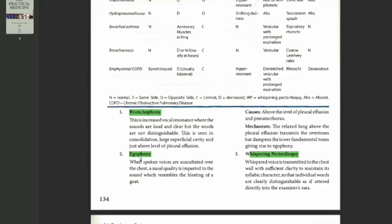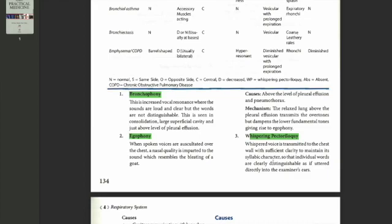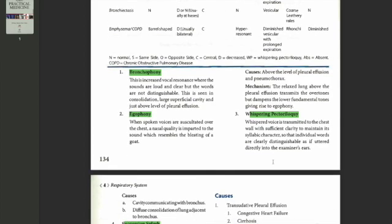A bronchophony. In egophony, you hear a nasal quality, so instead of 'ek do teen,' a nasal quality. In whispering pectoriloquy, you ask your patient to whisper, and when you keep your stethoscope, you hear that so clearly that you're able to understand the words.